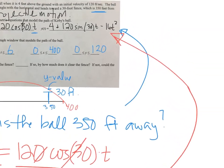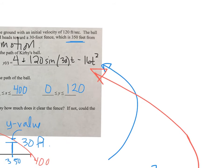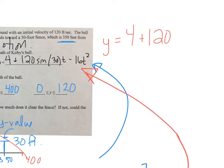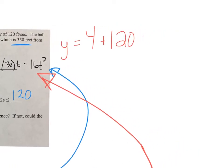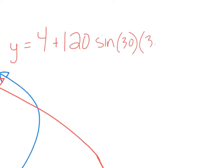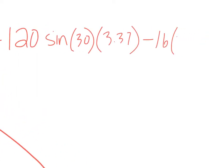That was 3.37 seconds. What is the y value when t is 3.37? So 4 plus 120 sine of 30 times 3.37 minus 16 times 3.37 squared.